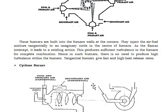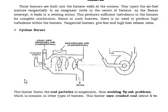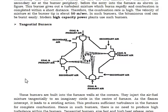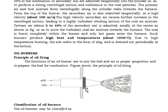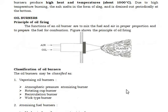Tangential burners give fast and high heat release rates. The cyclone burner — you can see it in the figure — burns the coal particles in suspension, thus avoiding fly ash problems which are common in other types of burners. The burner uses crushed coal. These are also the oil burners: the principle of oil firing and classification of oil burners, including vaporizing oil burners, atmospheric pressure atomizing burners, rotating cup burners, recirculating burners, mechanical or oil pressure atomizing burners, and high pressure air atomizing burners.